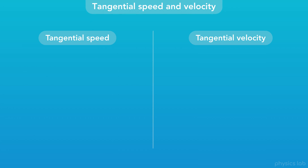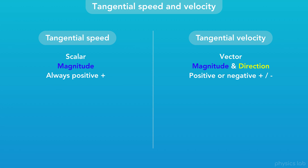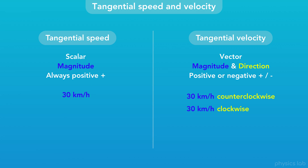Now let's talk about the difference between tangential speed and velocity. Speed is a scalar — it only includes the magnitude of the velocity, and it's always a positive number. But velocity is a vector — it includes both a magnitude and a direction, and it can be positive or negative. If a car's speed is 30 kilometers per hour, the velocity needs a direction. For circular motion, that can only be 30 kilometers per hour counterclockwise or clockwise, or positive or negative 30 kilometers per hour based on our axis.